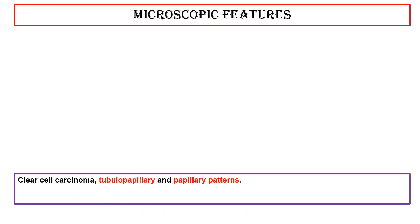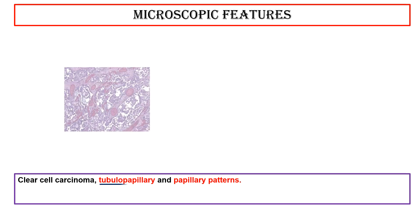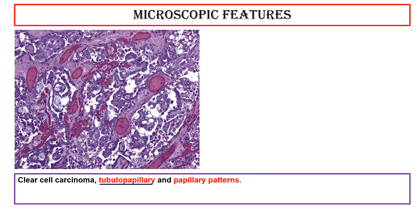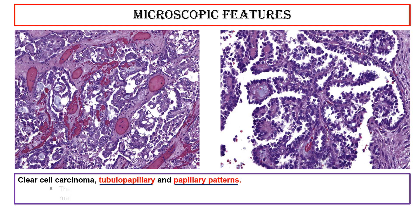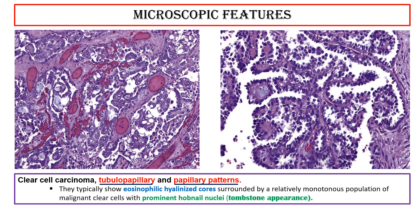Clear cell carcinoma — tubulopapillary and papillary patterns: they typically show eosinophilic hyalinized cores surrounded by a relatively monotonous population of malignant clear cells with prominent hobnail nuclei — the tombstone appearance.